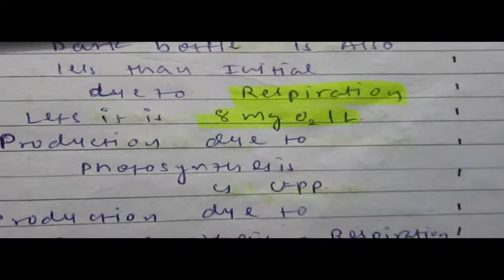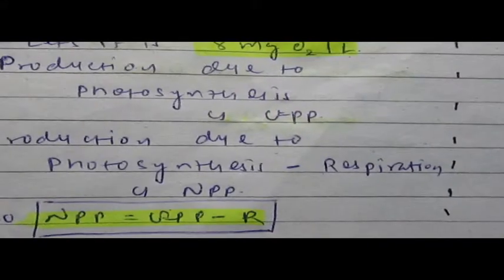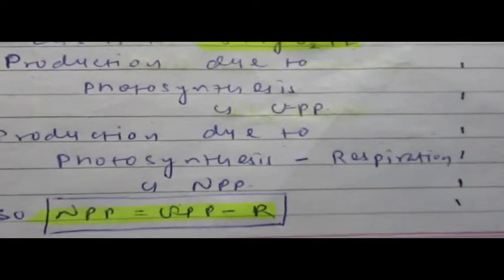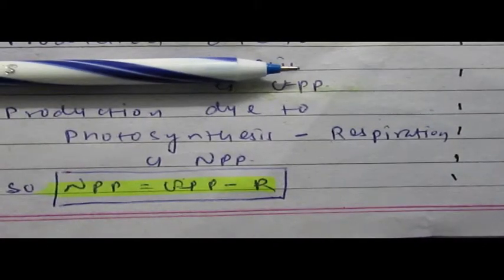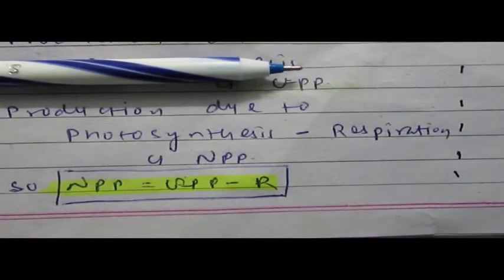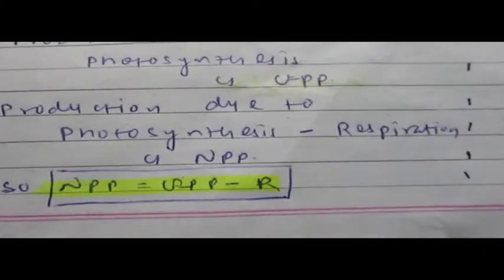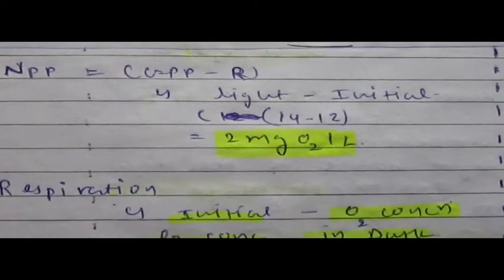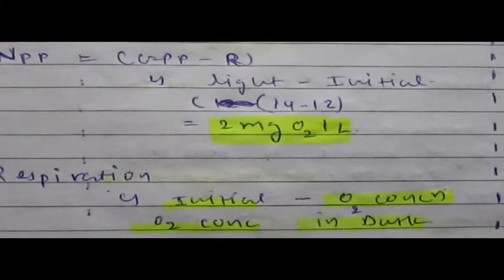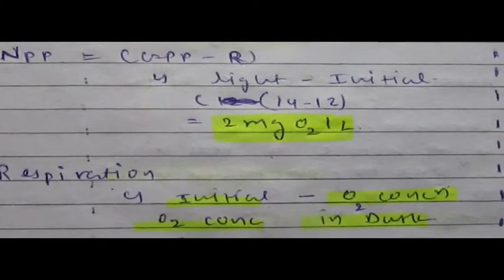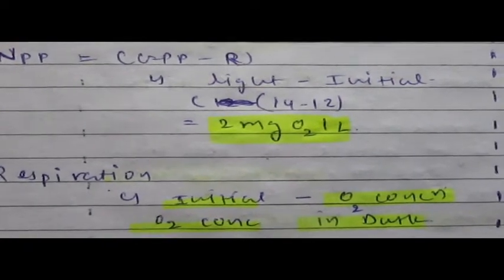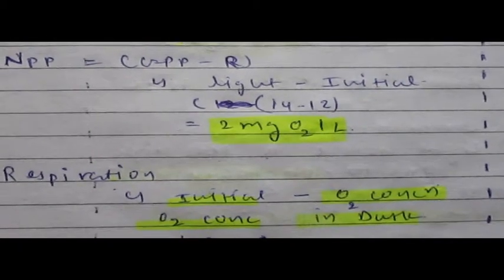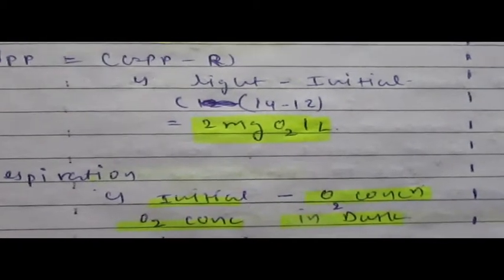Production due to photosynthesis minus respiration leads to net primary production. So the equation is: NPP = GPP − Respiration. Gross primary production results from photosynthesis and respiration together, both of which occur in the light bottle, while only respiration occurs in the dark bottle.